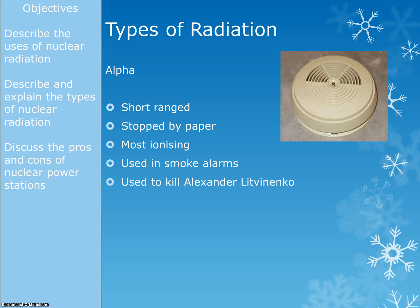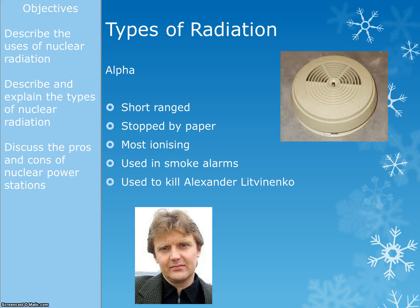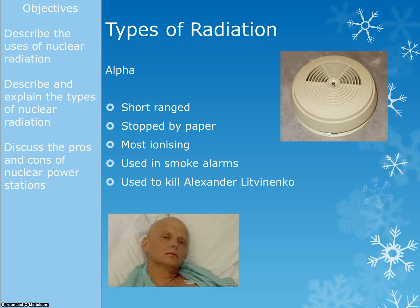Alpha is also the type of radiation that was used to kill Alexander Litvinenko. Someone put an alpha emitter into his tea. He drank it, and in a couple of weeks he looked extremely ill. So it is extremely dangerous.